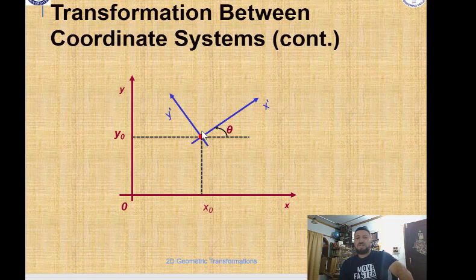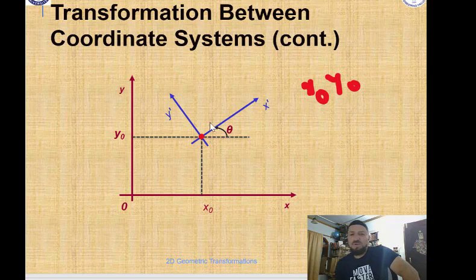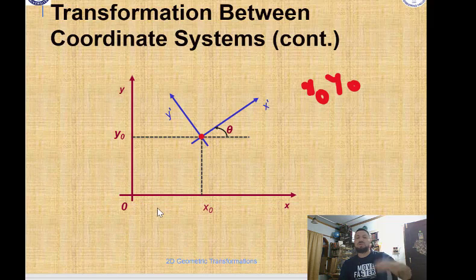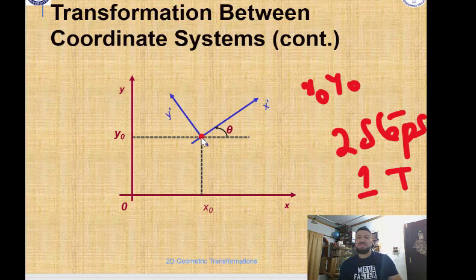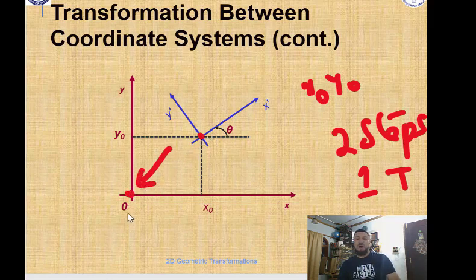This is the origin of the local coordinate system of the object we want to transform, so the origin is at x0, y0. Now we want to convert it into our coordinate system, so we have to do the transformation. It's a two-step process.